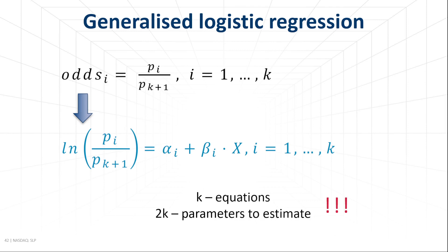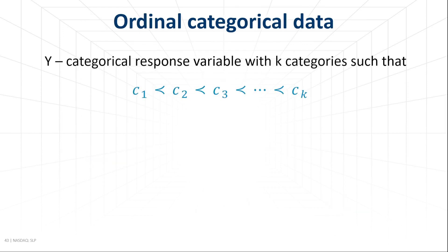This model has k equations and 2k parameters, because in general, separate alpha and beta correspond to different categories. This type of model can be useful for testing the effects of predictors simultaneously on all response categories. But given the number of parameters, the dataset needs to be rich enough to allow reliable parameter estimation. However, in clinical trials we often deal with several categories that have a special property — they are ordered.